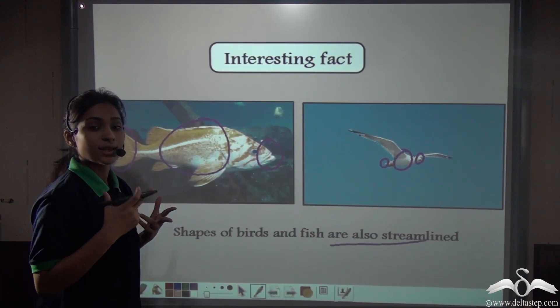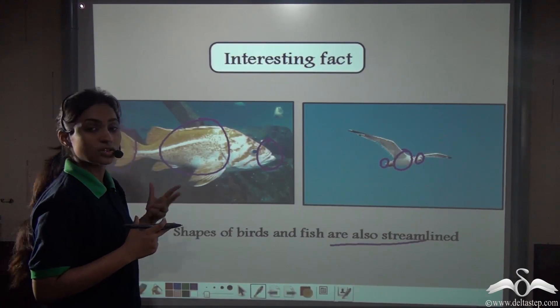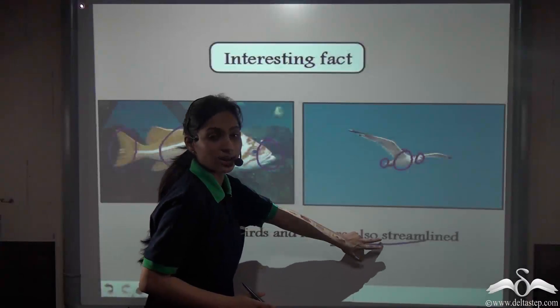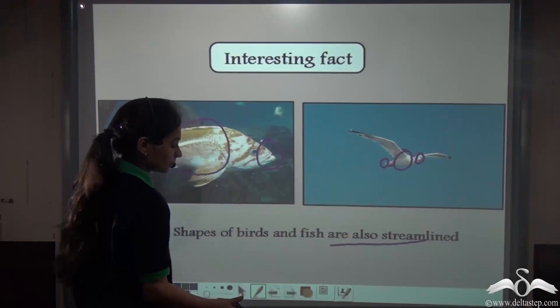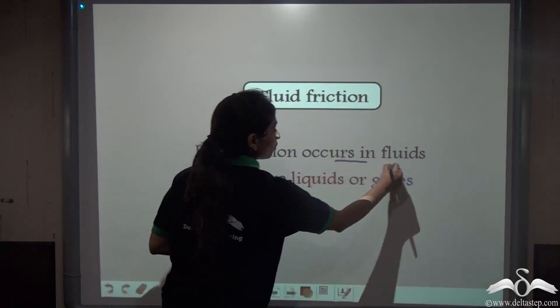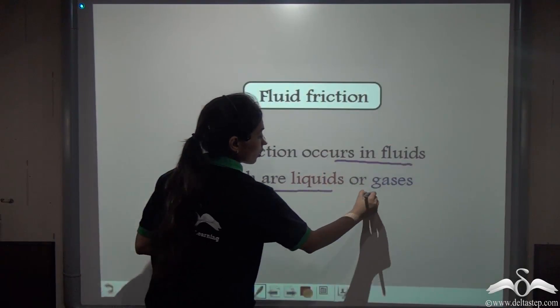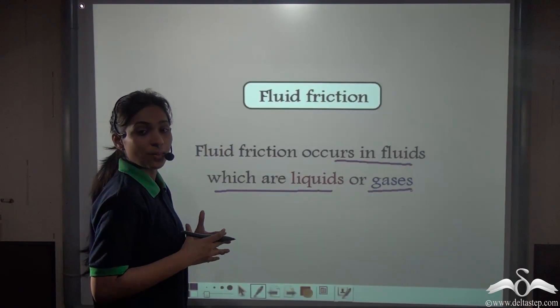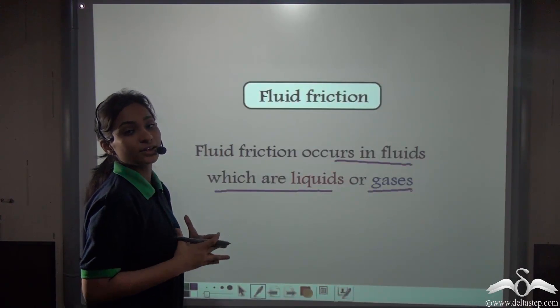The air and liquids, that is the fluid, they cause friction and that friction can be lessened by making things of the shape streamline. So what did we study? Fluid friction occurs in fluids which are liquids or gases, and this fluid friction can be reduced by making things streamline shape.